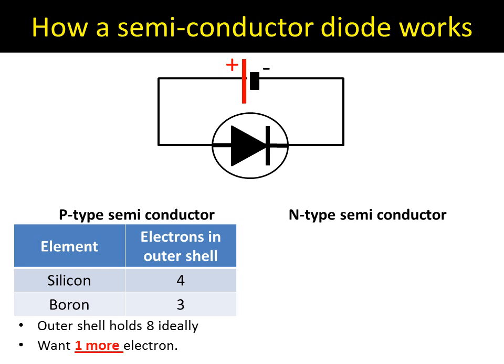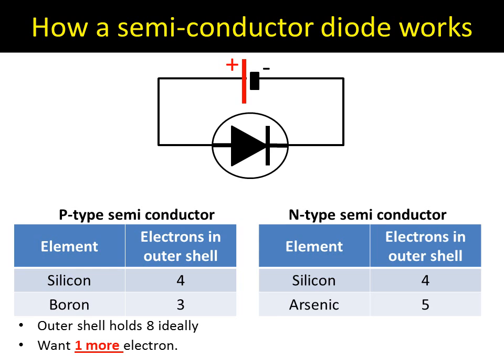On the n-type semiconductor — the negative part — silicon joins up with arsenic. Arsenic has an outer shell of five, giving a total of nine electrons. They really want eight, but they've got nine, so they want to get rid of one.